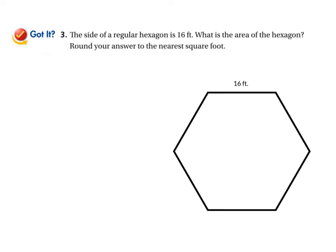The side of a regular hexagon is 16 feet. What is the area of the hexagon? Round your answer to the nearest square foot. The problem didn't come with a hexagon diagram, but you can sketch one out if that's helpful. Pause the video now, come up with the area doing what we just did, then unpause and check your answer.